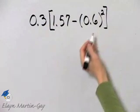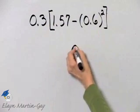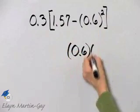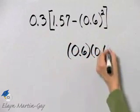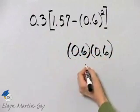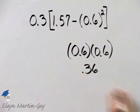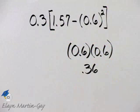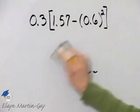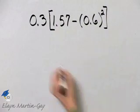Now what does that mean? It means 0.6 times 0.6. Well, I know 6 times 6 is 36, and I need two decimal places in my product, so 0.6 times 0.6 is 0.36. So let's start simplifying.